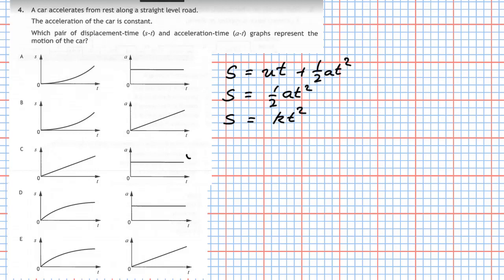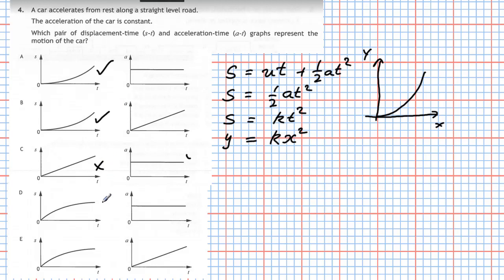Matching to axes, displacement s is the y-axis and t is the x-axis, giving y = kx², which from maths is a parabola sloping upward. We're looking for a displacement-time graph that is an upward-sloping parabola. For the acceleration-time graph, since acceleration is constant the graph must be a straight horizontal line — it should not change over time.